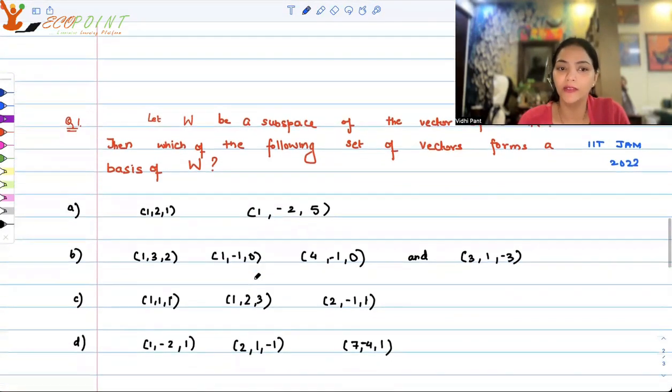The first option is (1,2,1), (1,-2,5). Second option is (1,3,2), (1,-1,0), (4,-1,0), (3,1,-3).